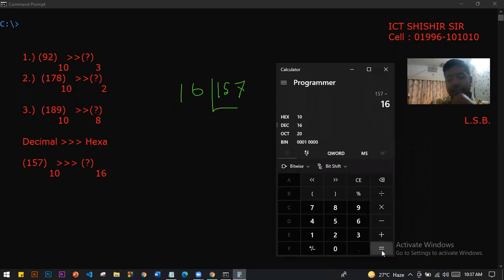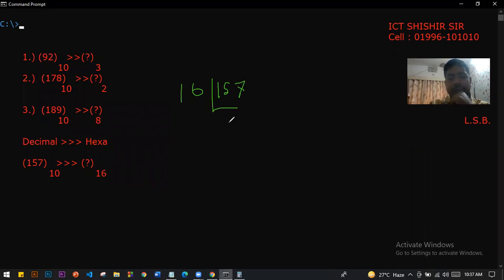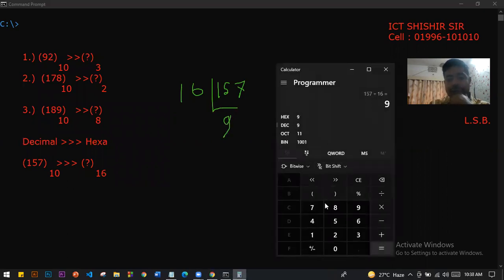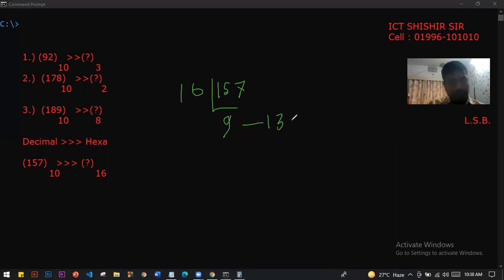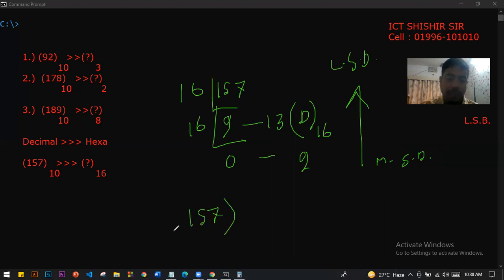To convert 157 into hexadecimal, I'll have to divide 157 by 16. 157 divided by 16 equals 9 times, so 9 into 16 equals 144. 157 minus 144 equals 13. So the remainder is 13.